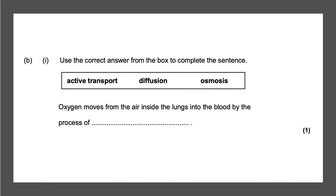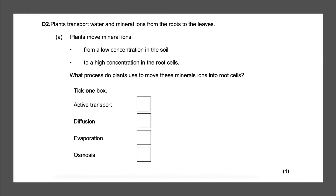Next question: use the correct answer from the box to complete the sentence — oxygen moves from the air inside the lungs into the blood by a process of... Remember gases move by diffusion. Active transport happens with minerals and osmosis happens with water, so diffusion will give you your one mark.